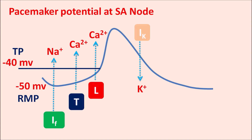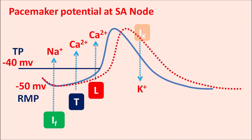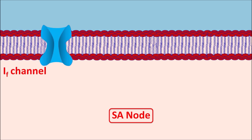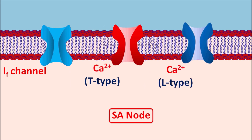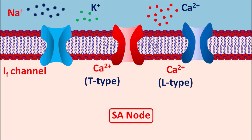Ivabradine can block these IF channels, thereby reducing the pacemaker potential, which results in the slowing of the heart rate. At the SA node, three important ion channels are present: IF channels (funny ion channels), T-type calcium channels, and L-type calcium channels. Sodium and potassium ions enter through the IF channels, and calcium enters through both T-type and L-type calcium channels.